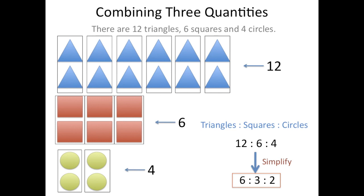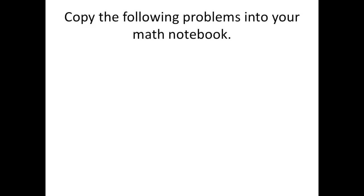Okay now that we've seen how to simplify with three quantities we're going to give a couple a try ourselves. So copy the following problems into your math notebook. We're going to write each ratio in its simplest form. So copy down number one: 14 to 8 to 6. And we're going to want to say 14 to 8 to 6 is equal to what when we simplify?